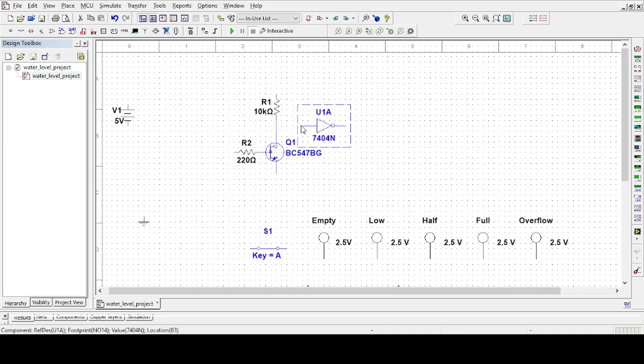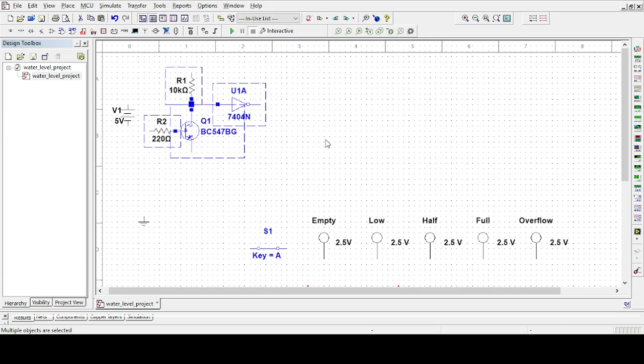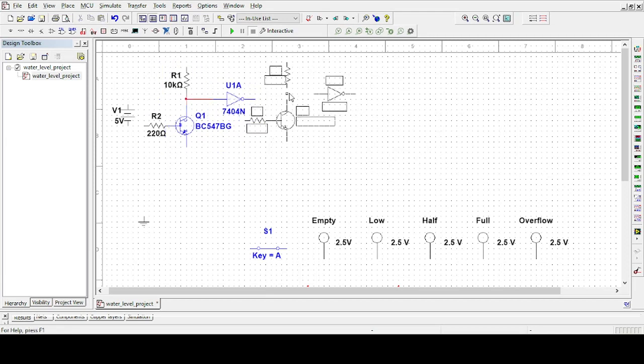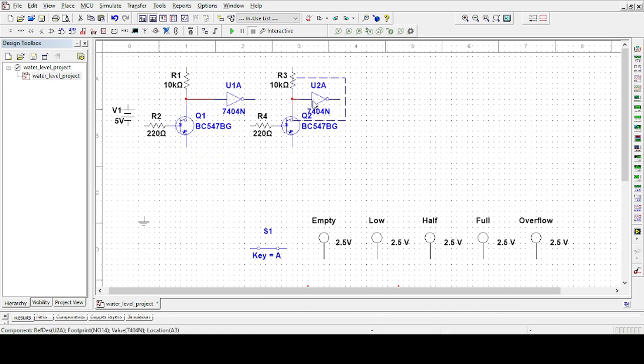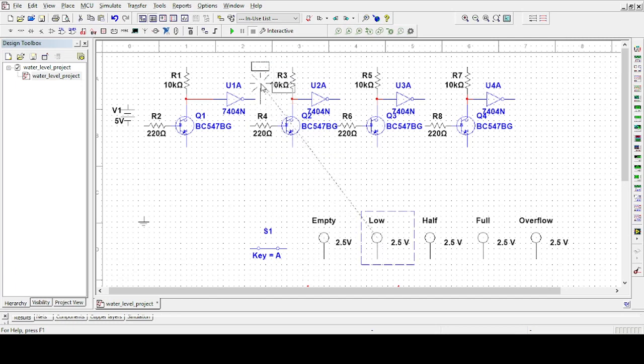Now we will copy this and paste it for four times. And now I am connecting to the other second light. Let's connect the LEDs with the NAND gate output: low on first one and half for the second one.